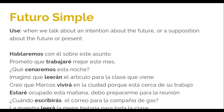The other future tense is futuro simple. We use it when we talk about an intention or a supposition about the future or present. Here are a few examples. Hablaremos con él sobre este asunto — We'll talk with him about this matter. Prometo que trabajaré mejor este mes — I promise that I will work better this month. ¿Qué cenaremos esta noche? — What will we have for dinner tonight? Imagino que leerán el artículo para la clase que viene — I imagine you will read the article for next class. Creo que Marcos vivirá en la ciudad porque está cerca de su trabajo — I think that Marcos will live in the city because it's near his job. Estaré ocupado esta mañana; debo prepararme para la reunión — I'll be busy this morning because I have to prepare for the meeting. ¿Cuándo escribirás el correo para la compañía de gas? — When will you write the email for the gas company? La maestra leerá la mejor historia para toda la clase — The teacher will read the best story for the whole class.